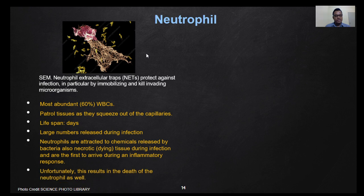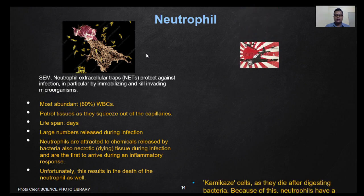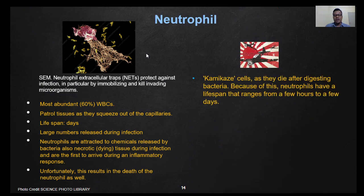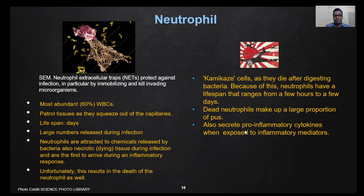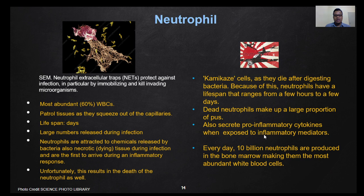Unfortunately, this results in the death of neutrophils as well. That is why they are also known as the 'kamikaze cells,' as they die after digesting bacteria. Because of this, neutrophils have a lifespan that ranges from a few hours to a few days. Neutrophils make up a large proportion of pus and also secrete pro-inflammatory cytokines when exposed to inflammatory mediators. Every day around 10 billion neutrophils are produced in the bone marrow.